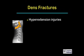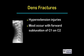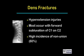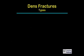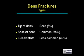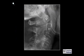Dens fractures are usually hyperextension fractures. They usually occur with forward subluxation of C1 on C2. There is a relatively high incidence of non-union of dens fractures — as high as sixty percent — and they do tend to be stable fractures. There are three major types: the rarest is a fracture of the very tip of the dens, the most common occurs at the base of the dens, and the next most common is a sub-dentate fracture.